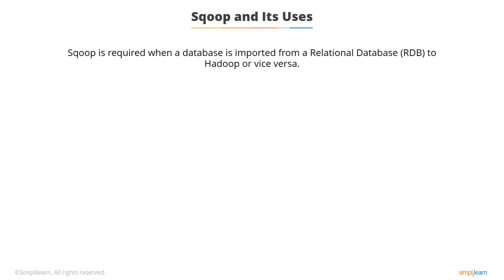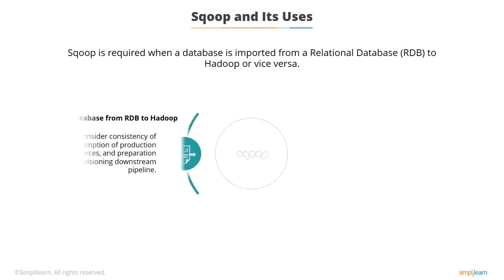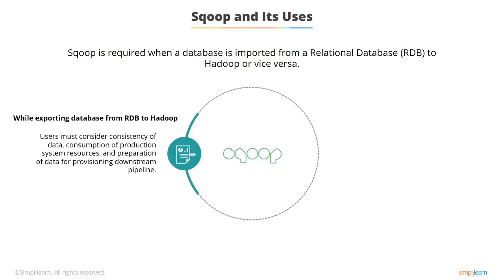Sqoop is required when a database is imported from a relational database, or RDB, to Hadoop or vice versa. A relational database, or RDB, refers to any data in a structured format. Databases in MySQL or Oracle are examples of RDB. While exporting databases from a relational database to Hadoop, users must consider consistency of data, consumption of production system resources, and preparation of data for provisioning downstream pipeline.